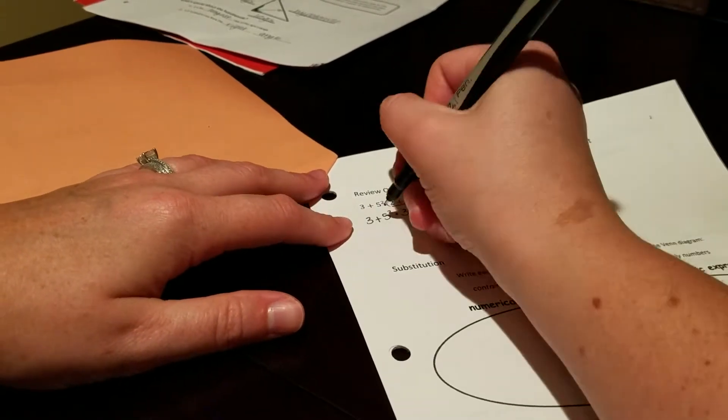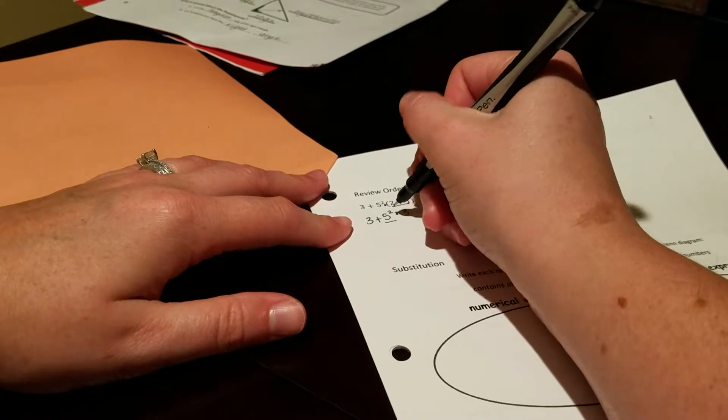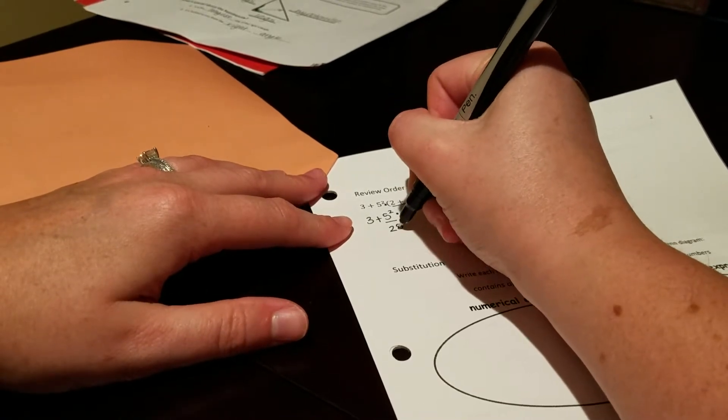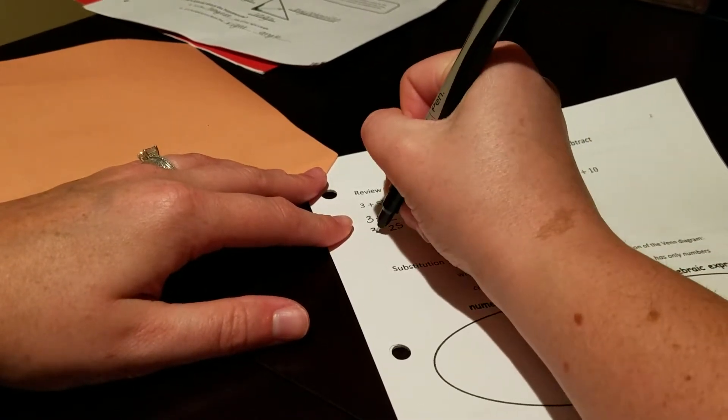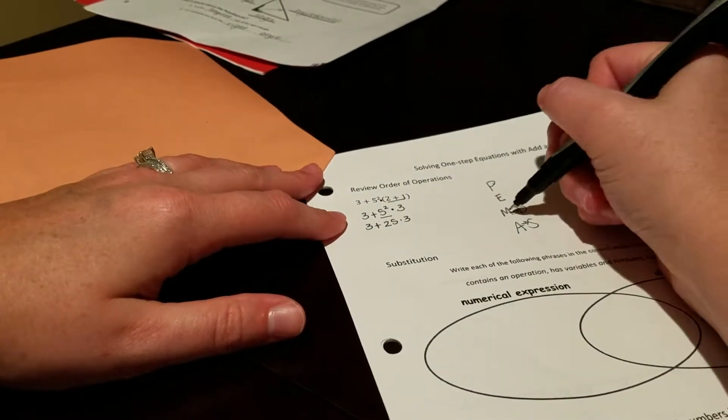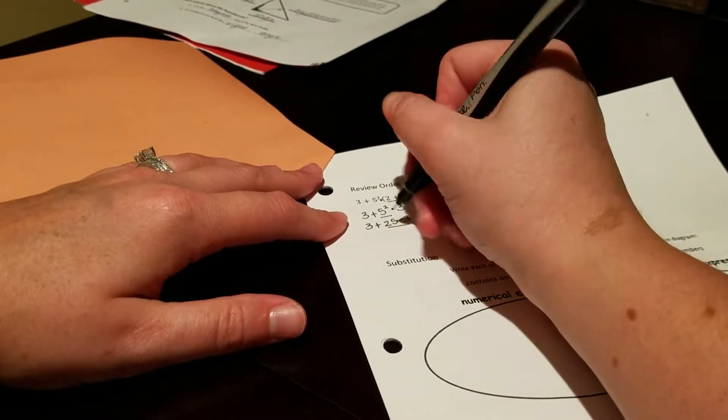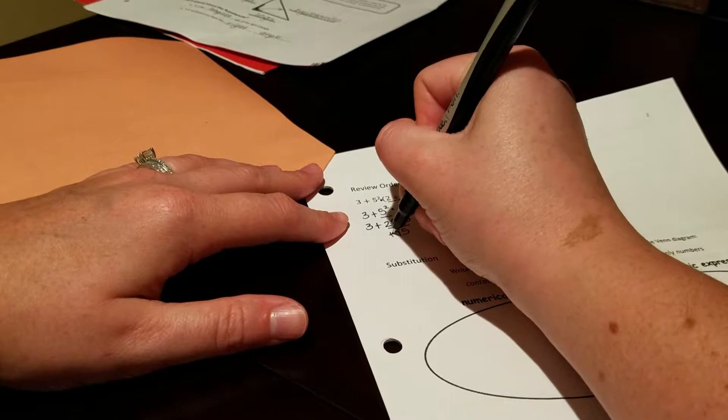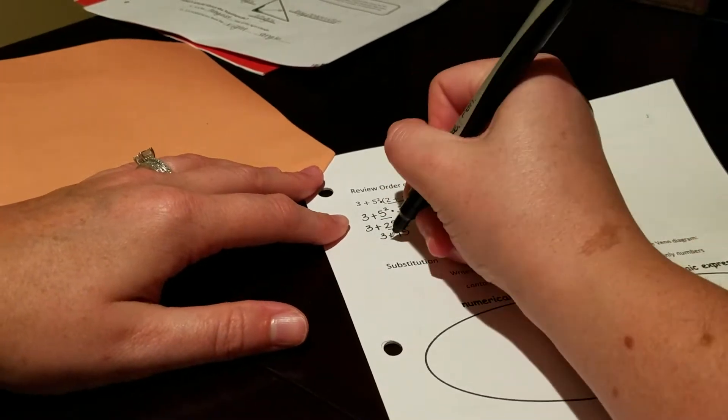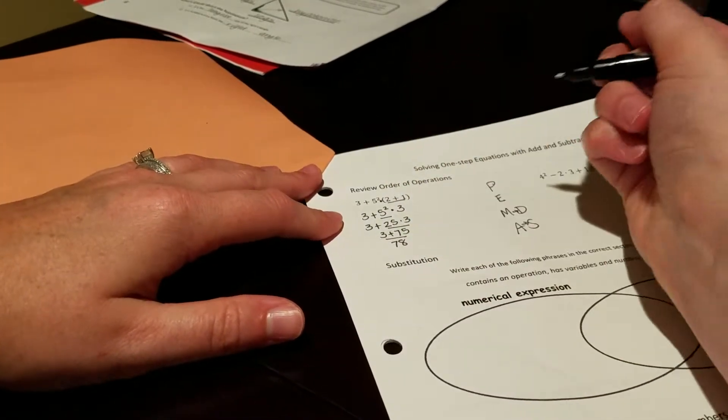So we took care of parentheses, exponents, which we have. 5 squared, remember that really means 5 times 5, so it's actually 25. And then we have multiply or divide, we do a multiplication. And the plus 3, which I keep bringing down, and that gives us a final answer of 78.